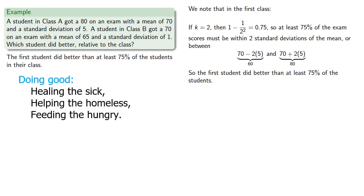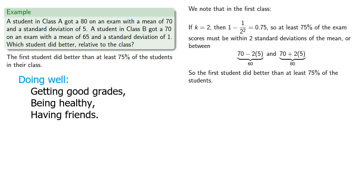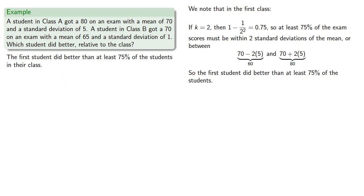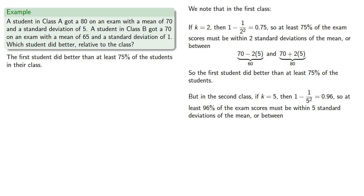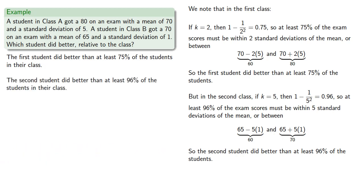They did really well. But how about the second student? In the second class, if k equals 5, then 1 minus 1 over 5 squared equals 0.96, so at least 96% of the exam scores must be within five standard deviations of the mean — between 65 minus 5 times 1 (which is 60) and 65 plus 5 times 1 (which is 70). Since this student got a 70, they did better than at least 96% of the students. So the second student did better relative to their class than the first student.